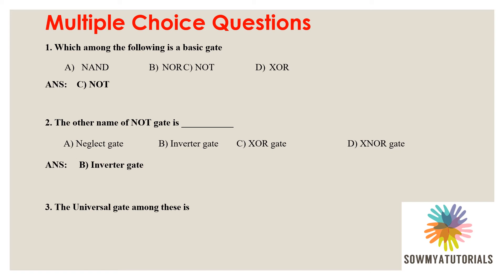Third question: the universal gate among these is which? Options: NOR, exclusive OR, NOT, and OR. The correct answer is option A, NOR. The basic gates AND, OR, and NOT can be easily implemented using NAND and NOR gates. NOR is a universal gate; exclusive OR is a derived gate, and NOT and OR are basic gates.